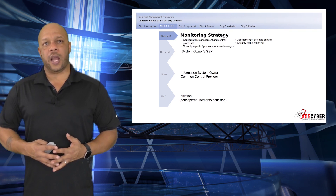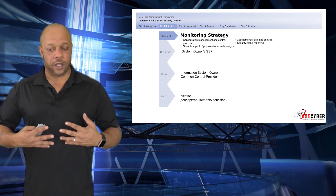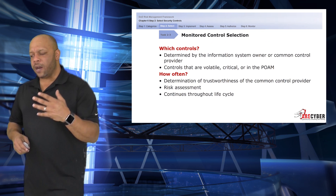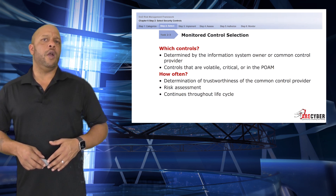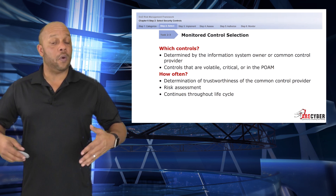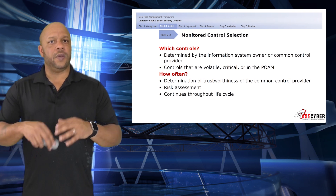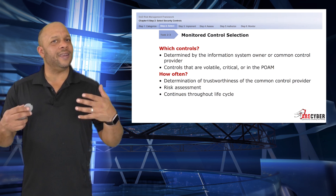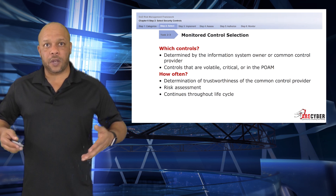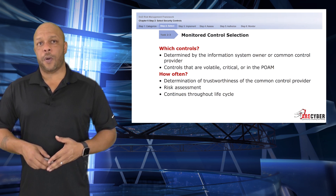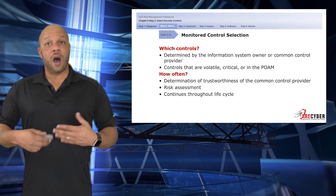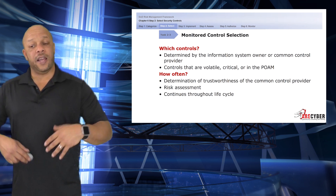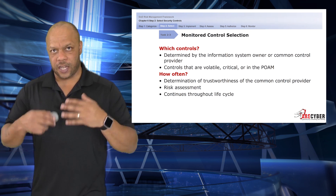General roles included at this point would continue to be the information system owner as well as the common control provider. When we identify monitored controls, it's determined by the information system owner or the common control providers themselves. The controls that are most volatile or critical, or on the POA&M, must be included for continuous monitoring. We also need to determine how often we will monitor, which is in part set by the determination of trustworthiness of the common control provider, as well as any outcomes from prior risk assessments.